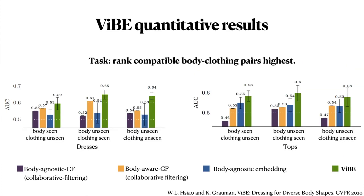We evaluate our model by ranking compatible body-clothing pairs highest. We split our dataset into three folds depending on whether the body or clothing was seen during training. We compare with three baselines, two of which are collaborative filtering-based and the other an embedding approach like ours.